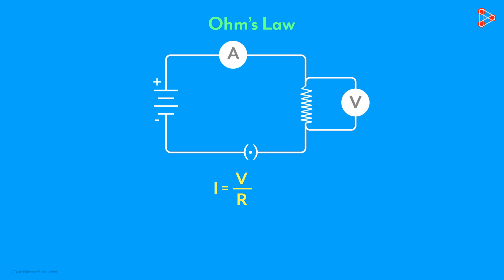Ohm's law in simple words gives us the relationship between the current, the voltage and the resistance in a circuit. This tells us that the flow of current is directly proportional to the potential difference between the points and inversely proportional to the resistance.